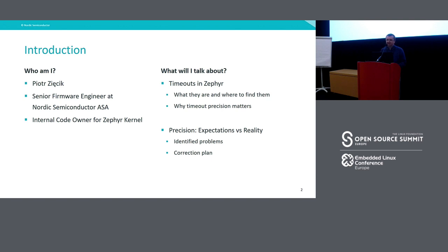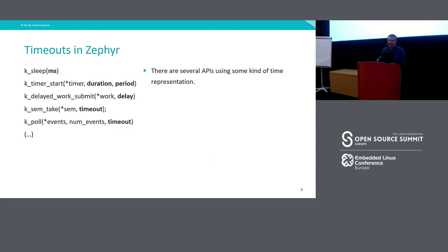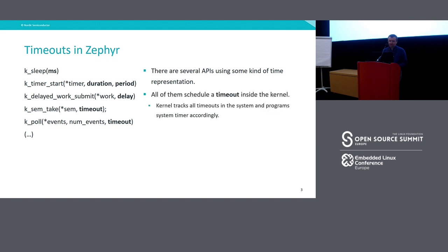So let's start with the theory. If you ever try to use Zephyr in even a hello world application, you'll notice that there are several API calls which take some kind of time as an argument. So you can sleep for several milliseconds, you can schedule a timer over some duration or period, you can have a timeout for an operation. All these API calls schedule a timeout inside the Zephyr kernel.